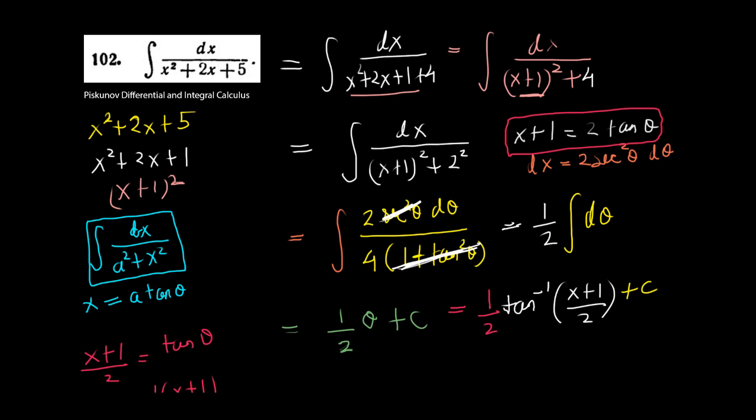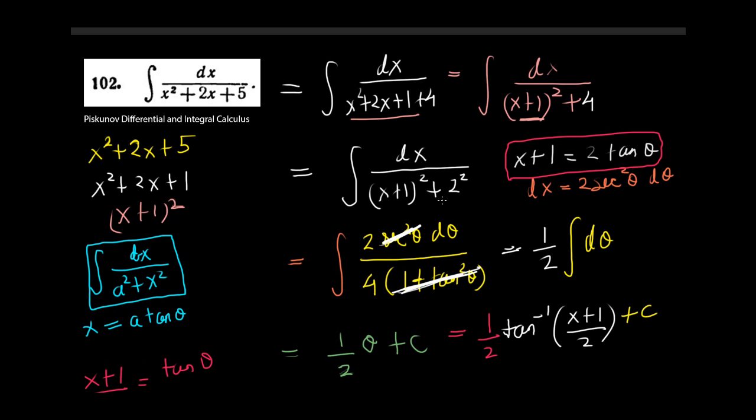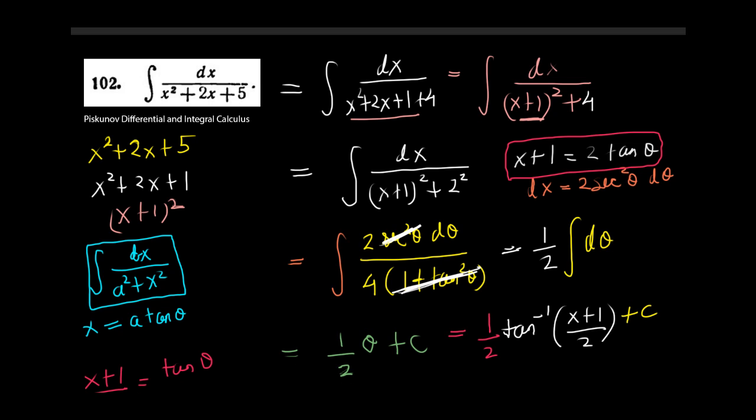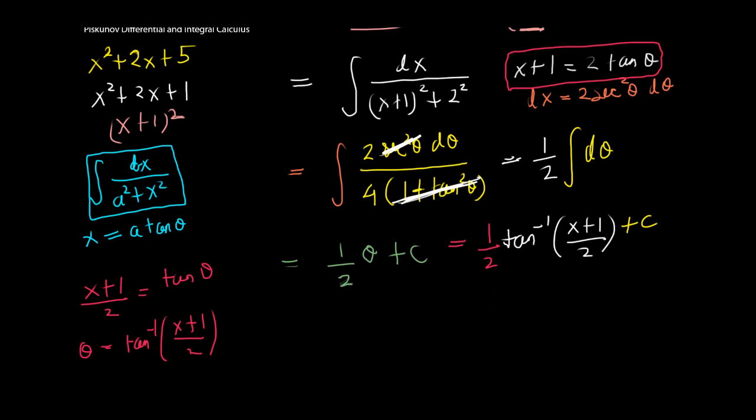So, you kind of have to see this. If there is no specific derivative of the denominator sitting on top, then you try something like completing the square of the denominator and then substituting this expression in the denominator, which is in terms of x, as a tangent of theta. And then you can simplify, differentiate and substitute and you can later solve the integral.